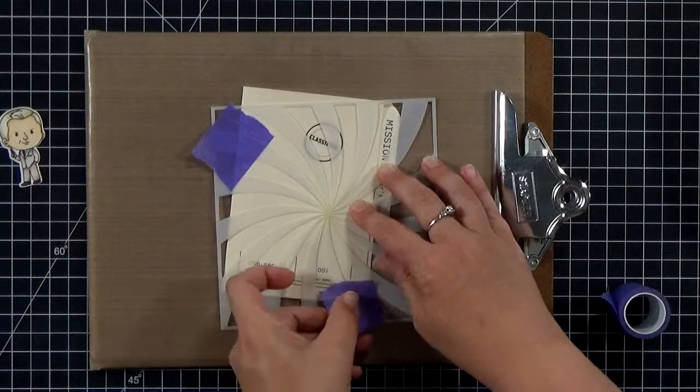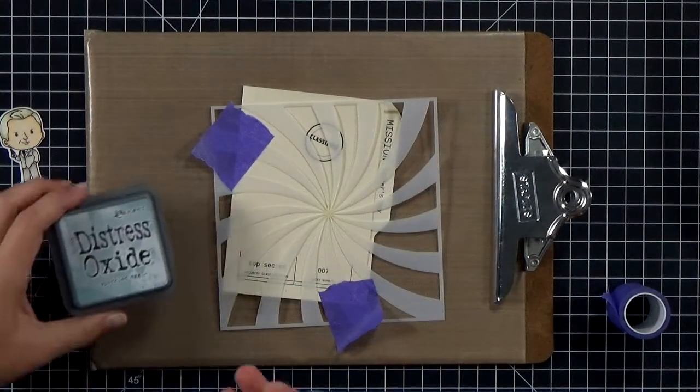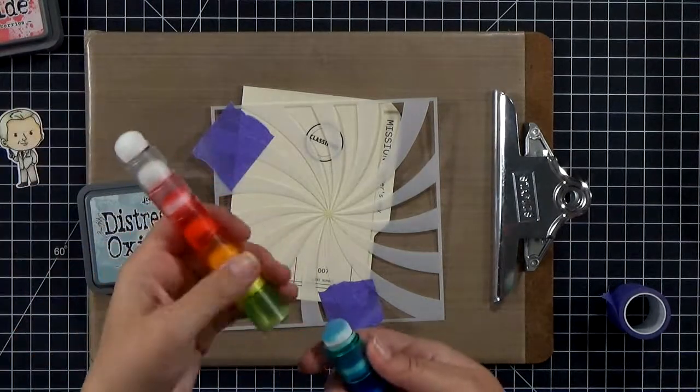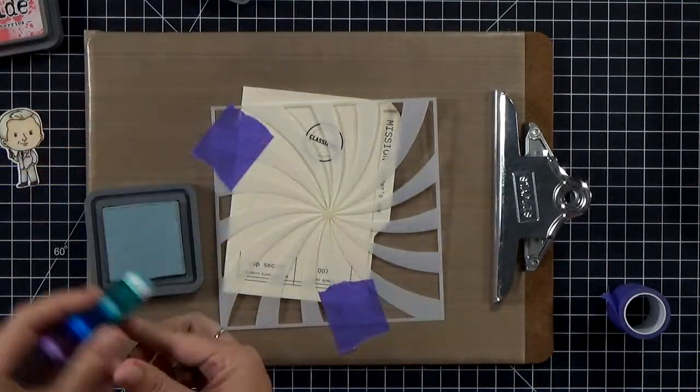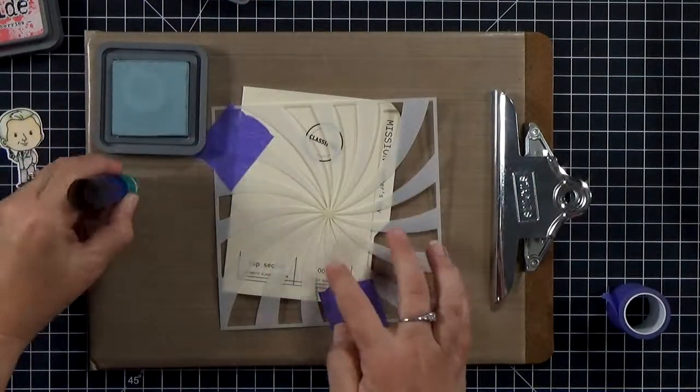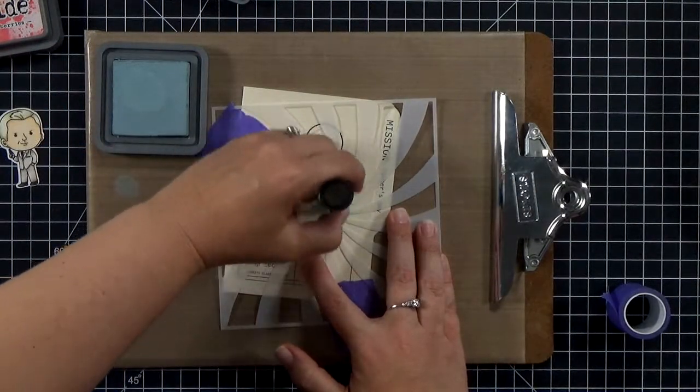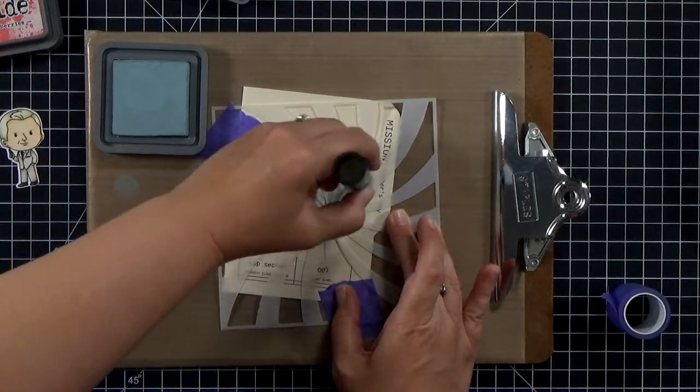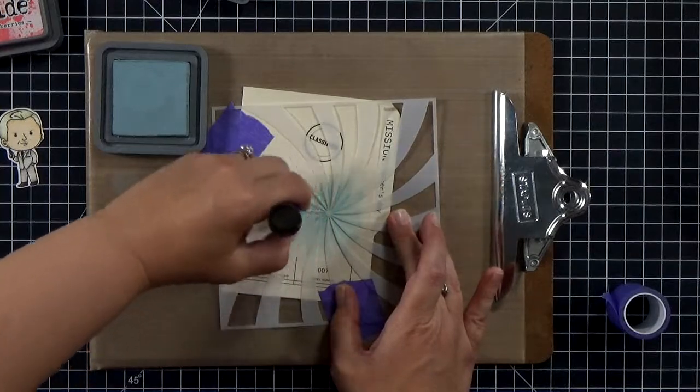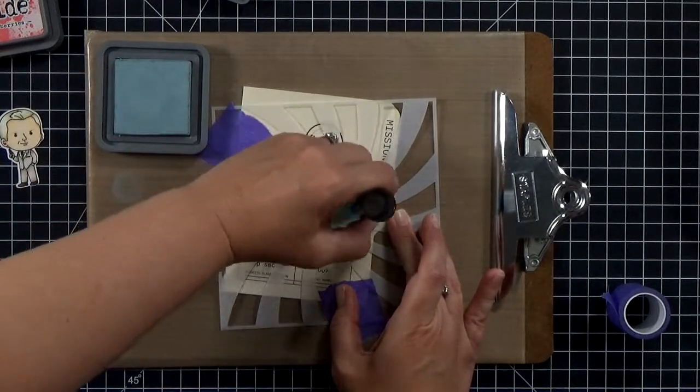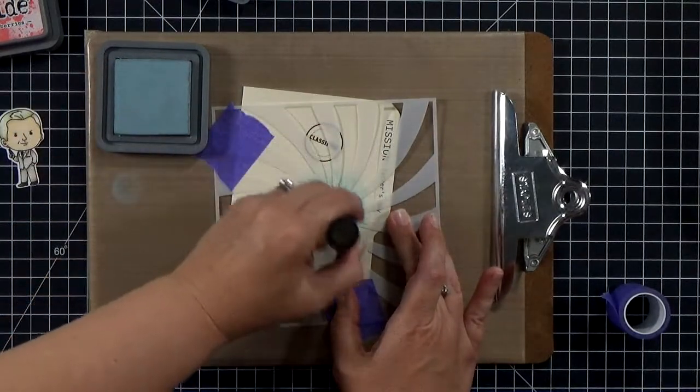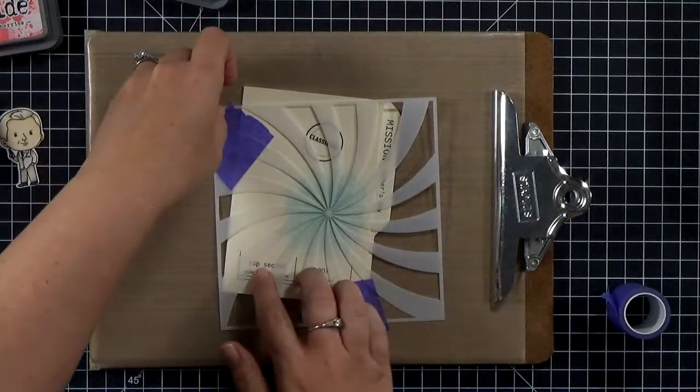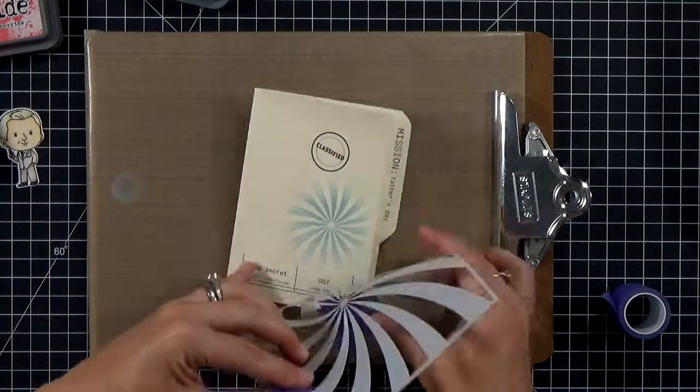And then I grabbed my new Speckled Egg Distress Oxide ink and a little brush. These are the iCrafter brushes. I love these because they're color coded. These are great for small areas, stenciled areas. And I'm just going to go around the circle. I'm not bringing it out too far, just a little bit. And I'm not going over the edge onto the back where it says Mission Father's Day. I'm keeping it all on the front of the card there. And then when we peel it back, we can see how he'll sit there.